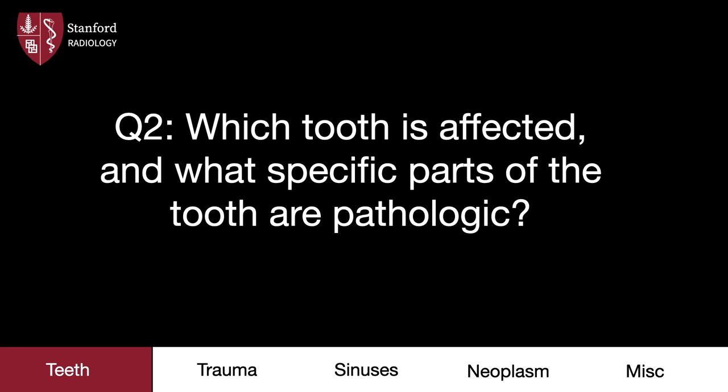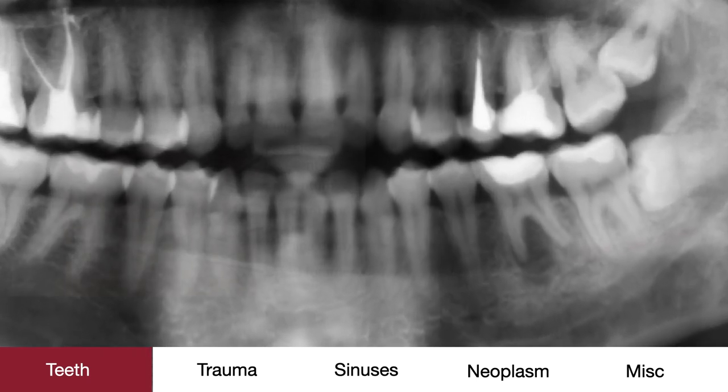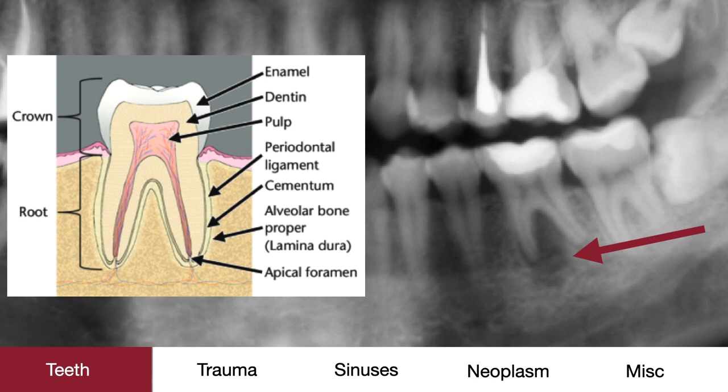For our second case, again identify which tooth is affected and which specific parts of that tooth are pathologic. Like the last case, the maxillary dental row demonstrates no acute abnormality, but one of the mandibular teeth does. Zooming in, we see that a periapical lucency surrounds the left first mandibular molar; the lamina dura and alveolar bones are lost. These findings overall represent a periapical abscess.